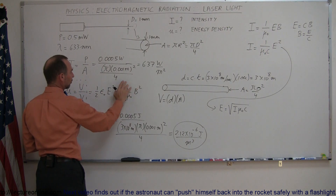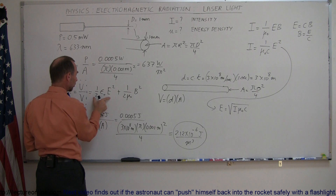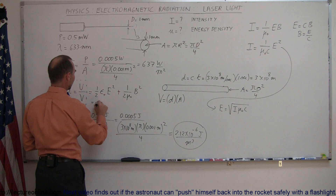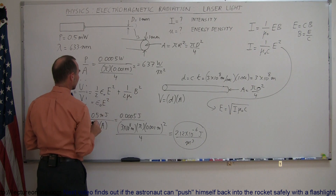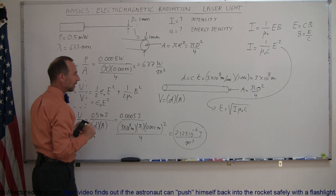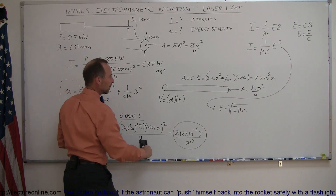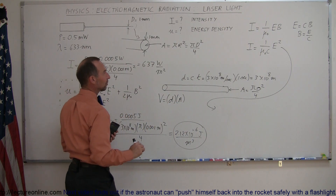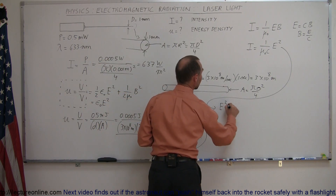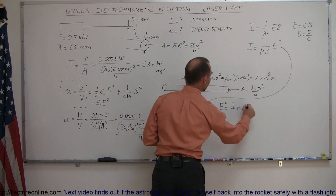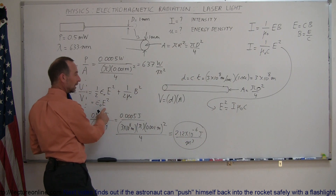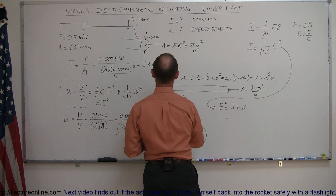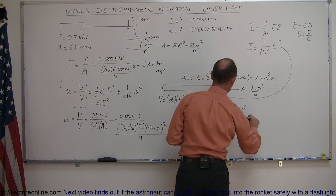Since half the energy is in the electric oscillations and half in the magnetic field oscillations, the total energy density equals ε₀E² — that is, twice the electric-only term. We need E², so E² = I·μ₀·c. We don't need to take the square root since we need E² in the final formula. The intensity was 637 watts per square meter, and we'll multiply by μ₀ and c.